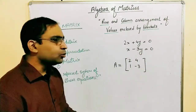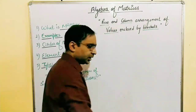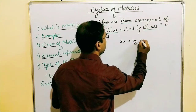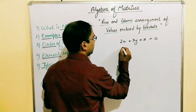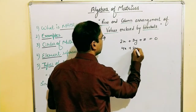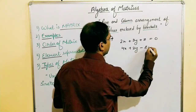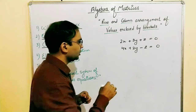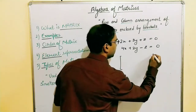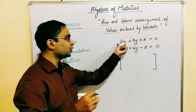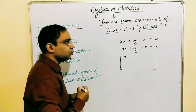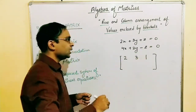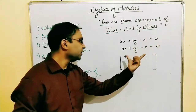Let's understand this with one more example. Let's say we have a system: 2x + 3y + z = 0 and 4x + 2y − z = 0. Here we have two equations and three variables. For the first equation, the coefficient of x is 2, then 3, then 1. So the coefficients of the first equation are written in the first row.